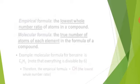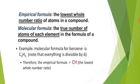First we discuss empirical formula and molecular formula. Empirical formula tells us the simplest or lowest whole number ratio of atoms in a compound, whereas the molecular formula gives the actual true number of atoms of each element in the formula of a compound.